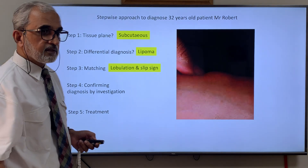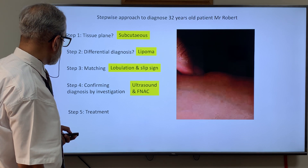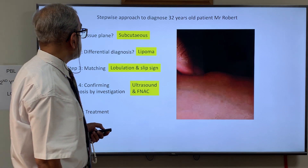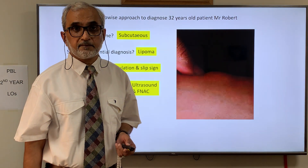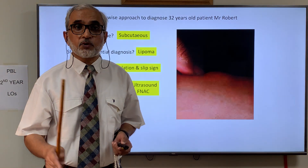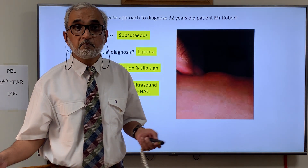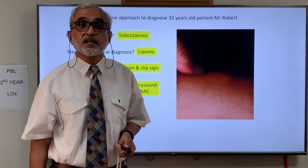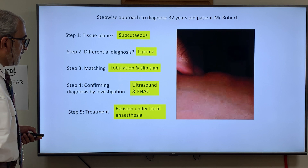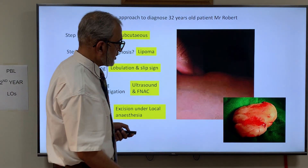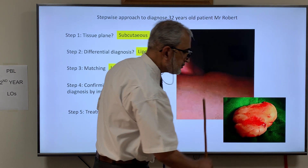To confirm it was a lipoma, I performed ultrasound and fine needle aspiration cytology, which confirmed the diagnosis. The lipoma was only 2 to 3 cm, and it was not growing rapidly with no signs of malignancy, so excision was not strictly essential. However, the patient desired it to be removed. My treatment was excision under local anaesthesia — and if you look at this photograph of the lipoma, you can even see the lobulation.